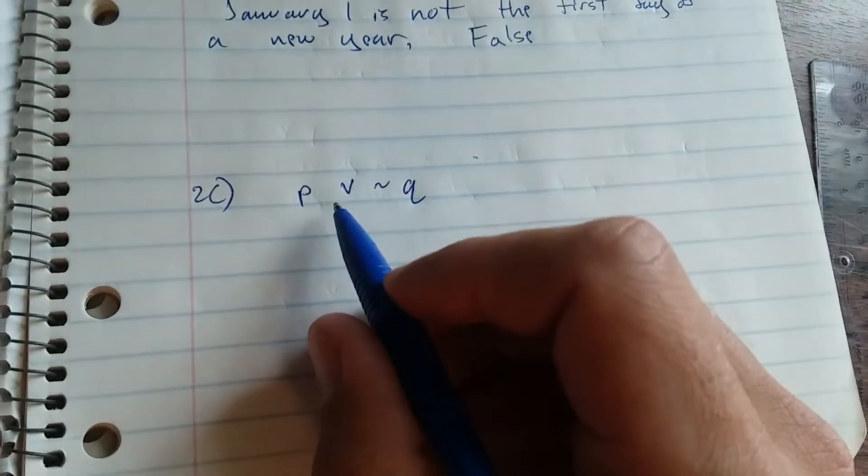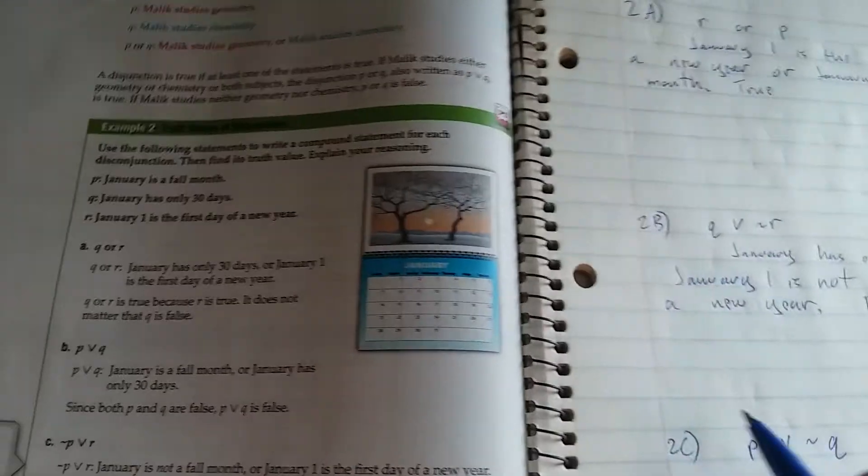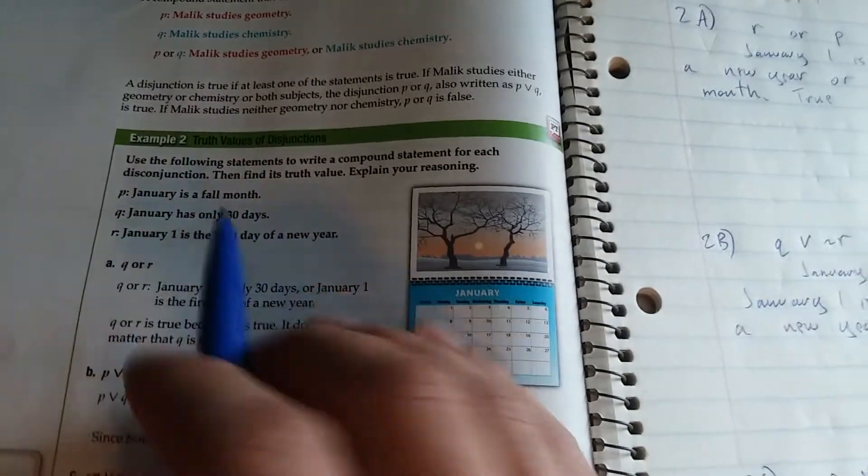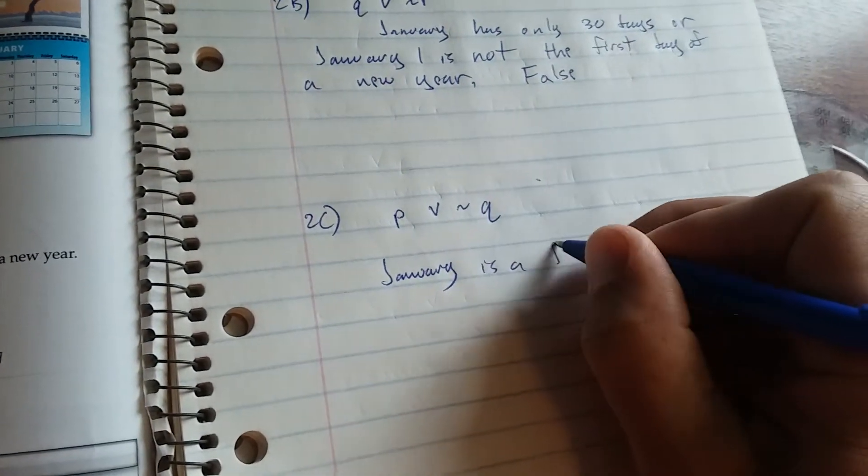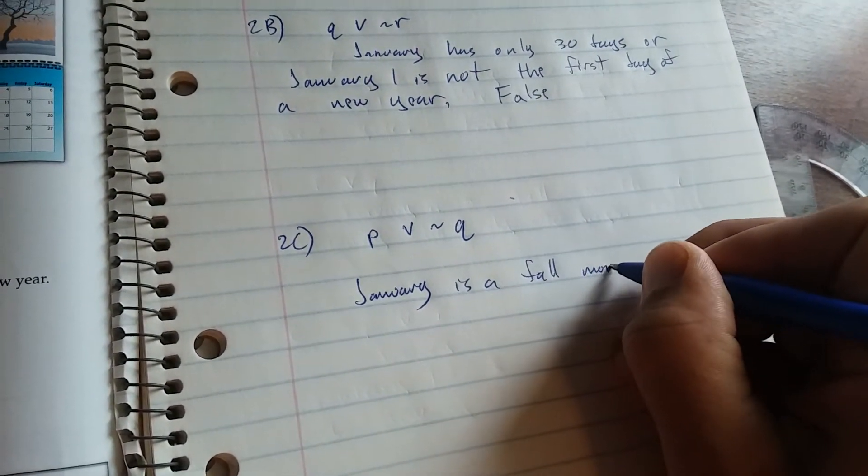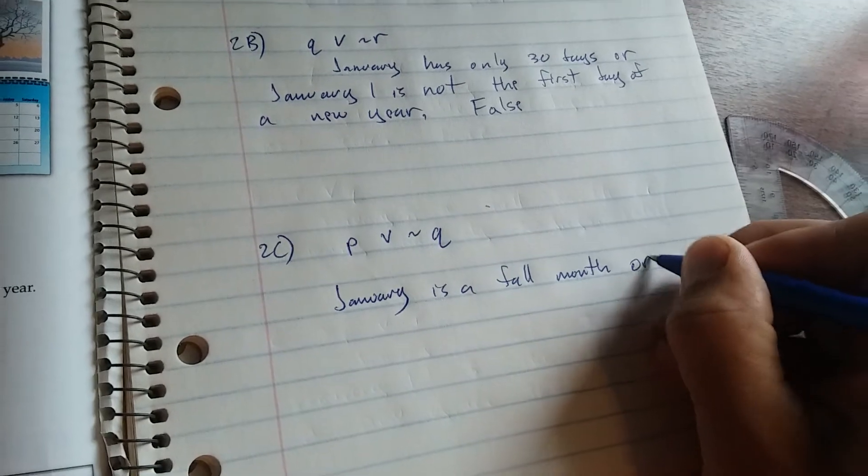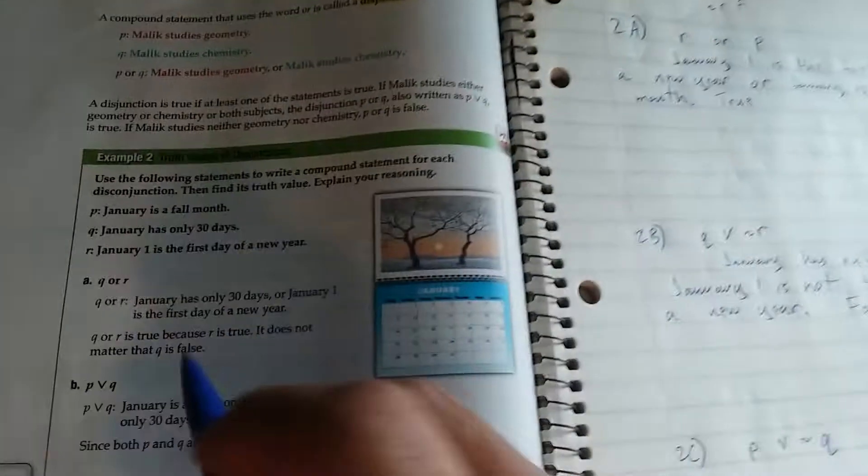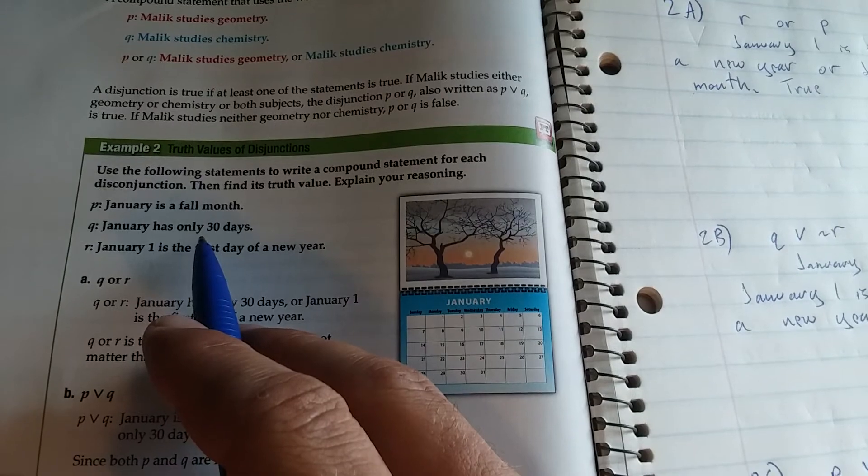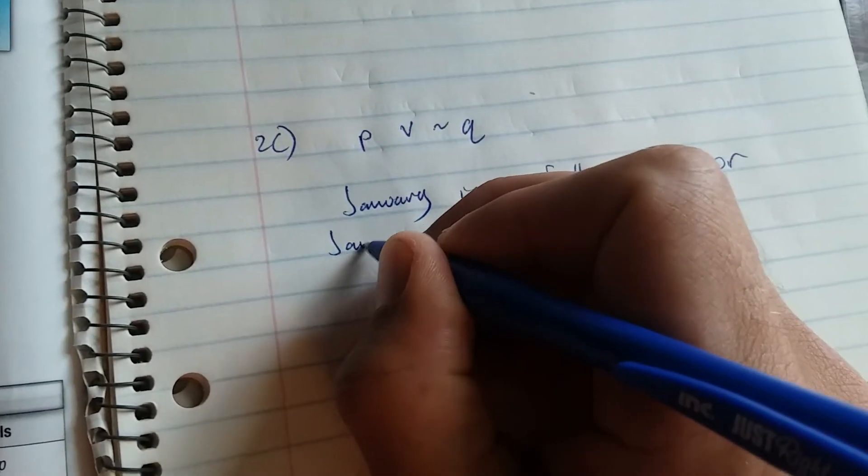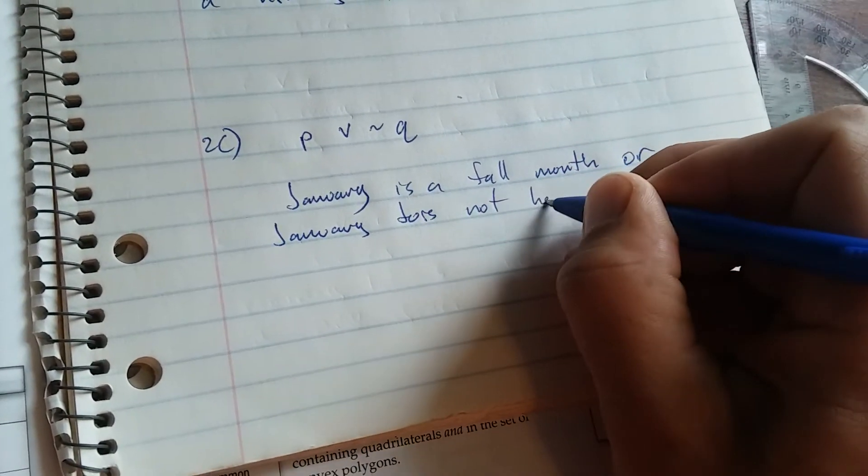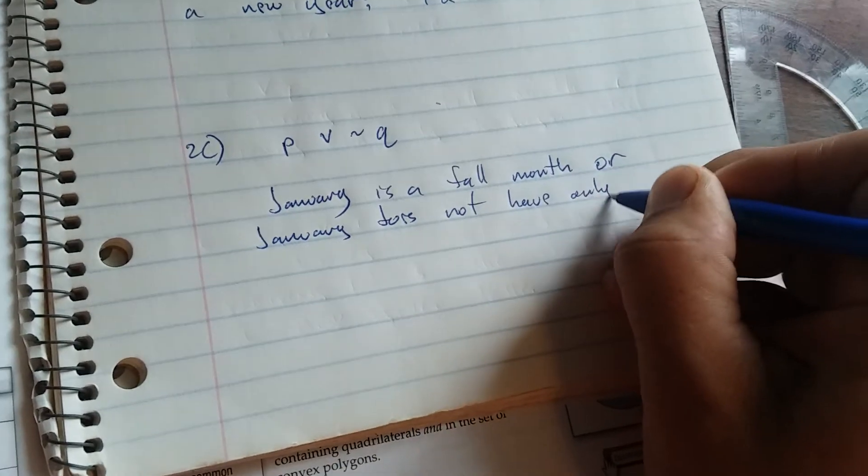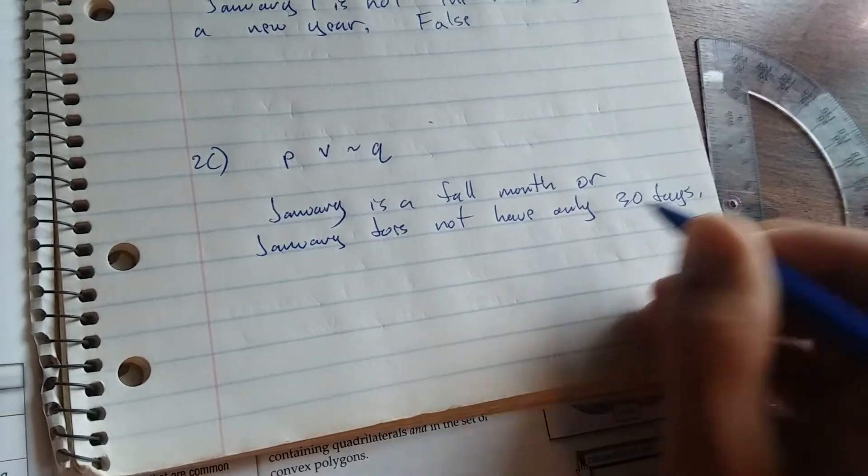Your next part here, we have P or not Q. So it's going to be January is a fall month, or not Q, which means January does not have only 30 days.